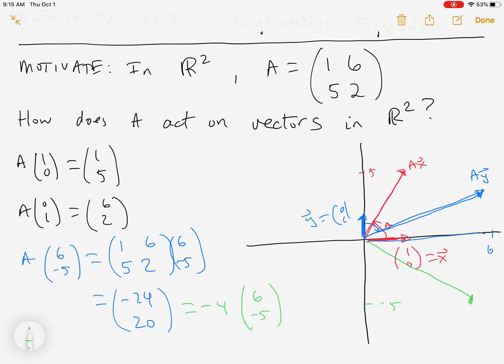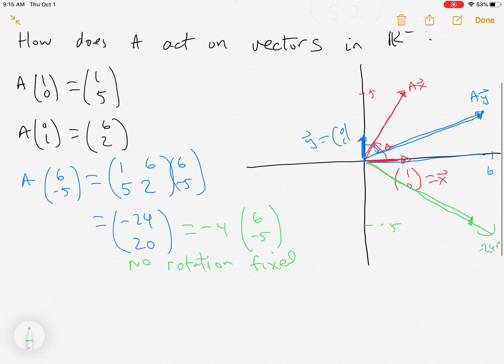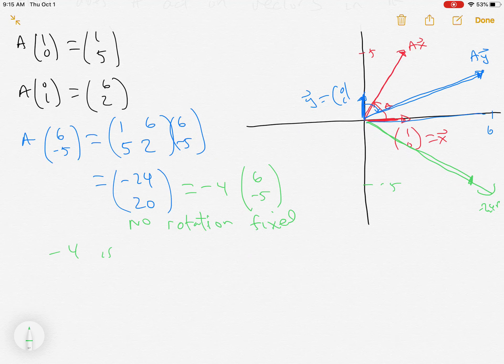What does A do to that? Well, (-24, -20), you can't see it on here. So if I factor out a -4 from this, I get (6, -5). So all it does is lengthens it. So I go from here all the way out to (-24, -20). So there's no rotation. And so this vector gets fixed under this relationship.